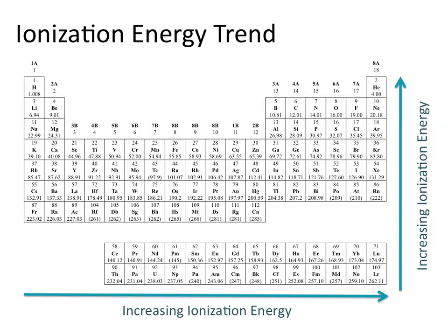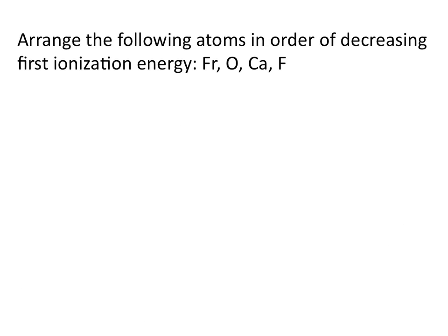Ionization energy also increases as you move from left to right across the periodic table. Let's look at an example involving ionization energies. Arrange the following atoms in order of decreasing first ionization energy: francium, oxygen, calcium, and fluorine. We want to put these atoms in order from the one that's hardest to remove an electron from to the one that's easiest.